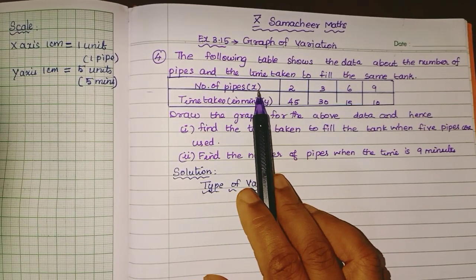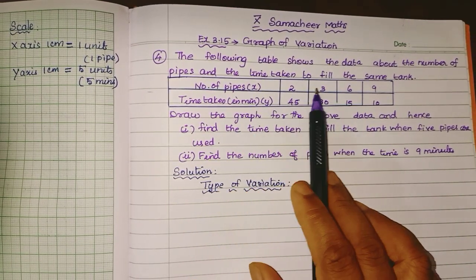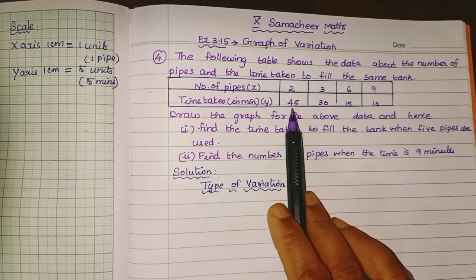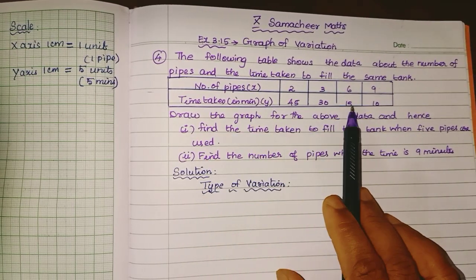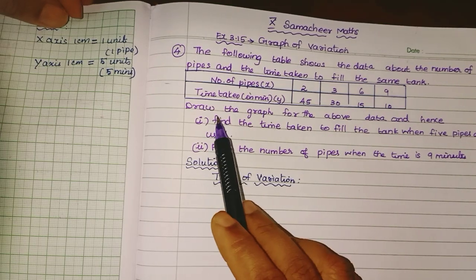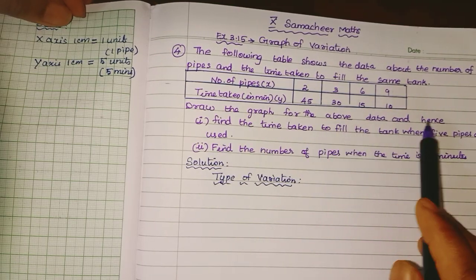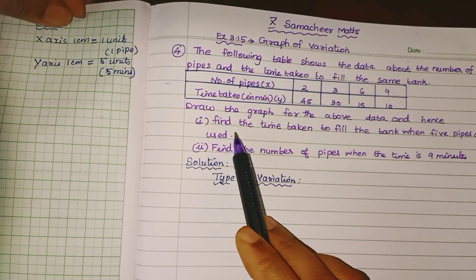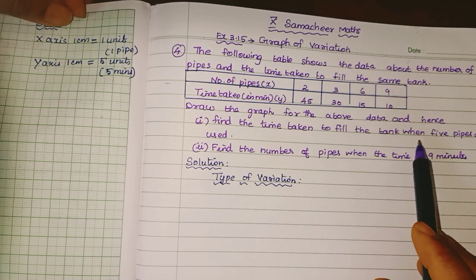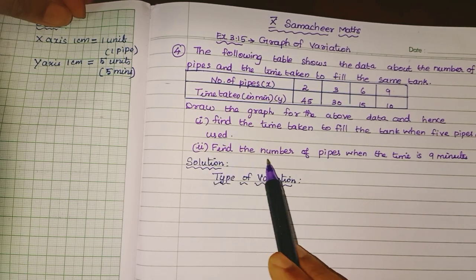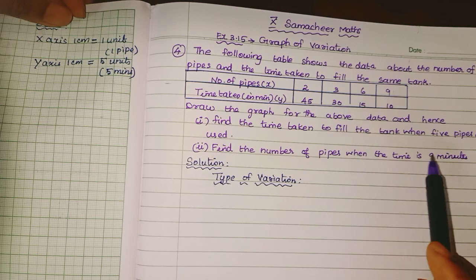Number of pipes: 2, 3, 6, 9. Time taken in minutes: 45, 30, 15, 10. Draw the graph for the above data and hence find: first, the time taken to fill the tank when 5 pipes are used; second, find the number of pipes when the time is 9 minutes.